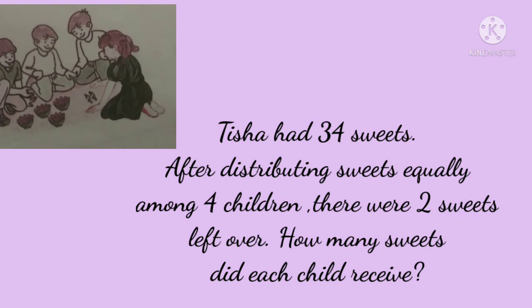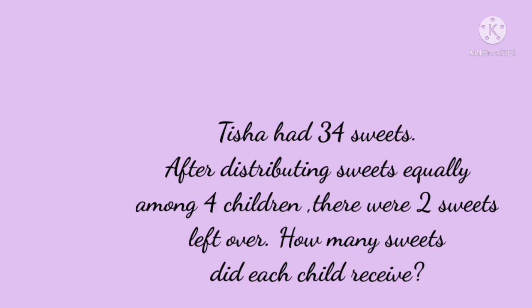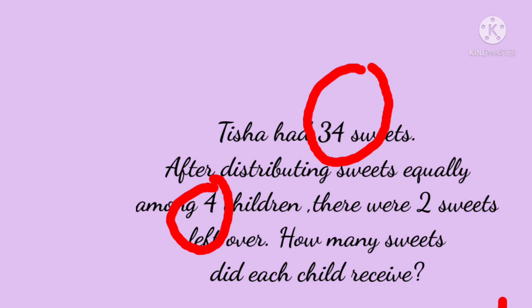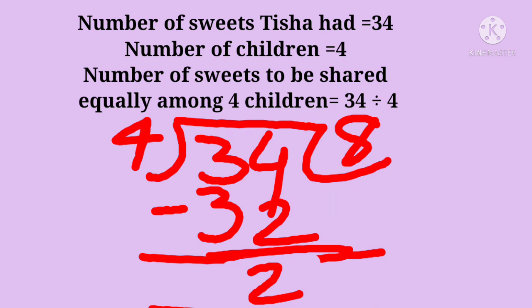Tisha must have done some calculation so that each one of them gets an equal number of sweets. That means Tisha had to divide 34 sweets by 4 children. Let us see the statement: number of sweets Tisha had — 34; number of children — 4. Number of sweets to be shared equally among 4 children will be 34 divided by 4.